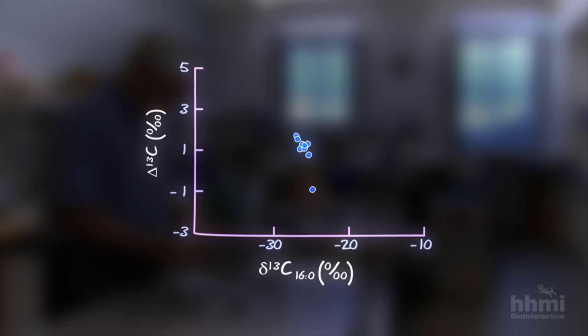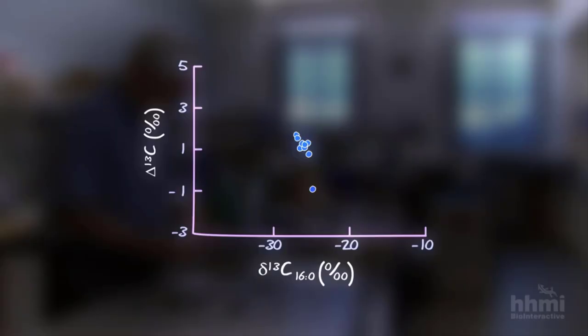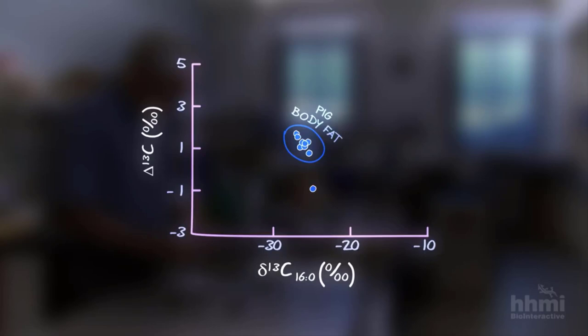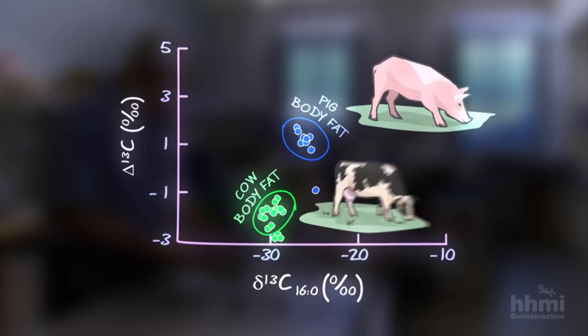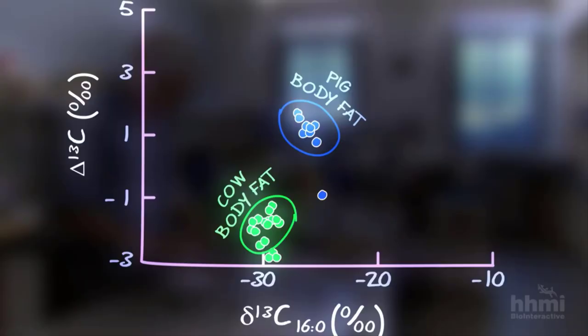Clustering in one part of the plot were body fats from pigs; in another region were body fats from ruminants such as cows. But there was more: there were just these points disappearing off the bottom of the graph. They were the milk fats.